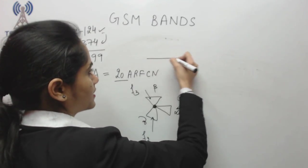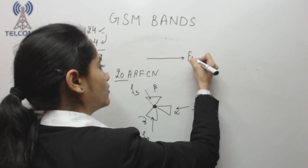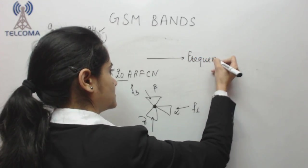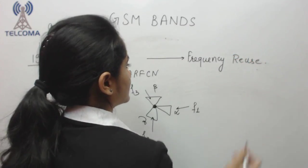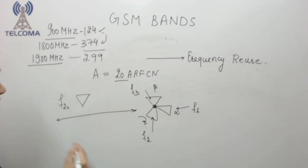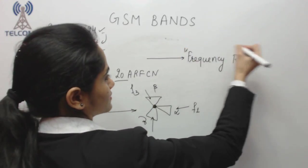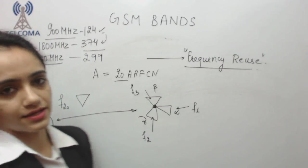In order to make frequency usage more efficient, we have a concept of frequency reuse. After a certain distance where frequencies will not interfere with one another, we can reuse the frequency again. We call this concept frequency reuse.